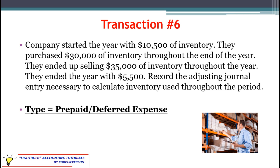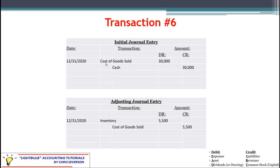Inventory follows the same basic approach. The company started with $10,500 of inventory, purchased $30,000 during the year, and sold $35,000 worth, ending with $5,500 remaining. Under method two, the initial purchase entry debits cost of goods sold $30,000 and credits cash $30,000 — recording it all as expense. The adjusting journal entry pulls back the ending inventory: debit inventory $5,500 to increase it and credit cost of goods sold $5,500 to reduce that expense.